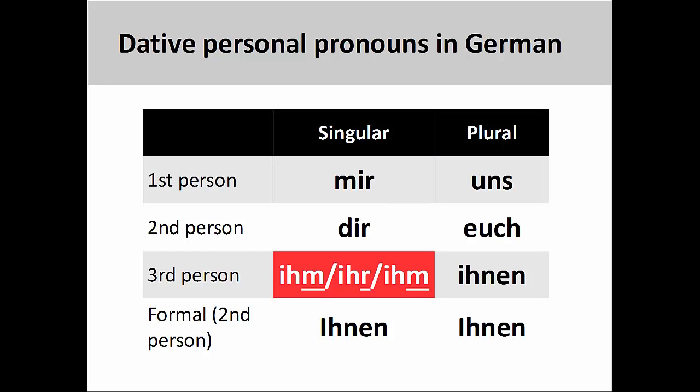The dative third-person singular forms are ihm, masculine, ihr, feminine, and ihm, neuter. You will notice that the masculine and neuter forms are identical, so you will need to be careful in distinguishing between the two. Notice, however, that both these forms end in -em, which is the same ending for the dative definite article dem.